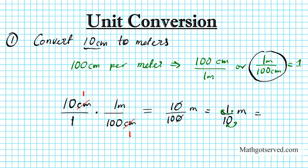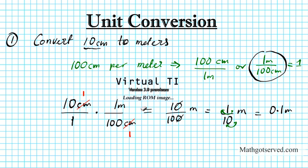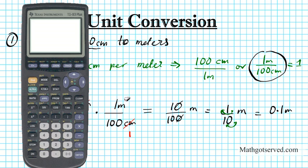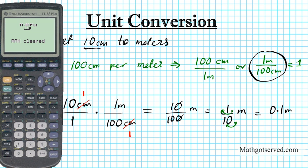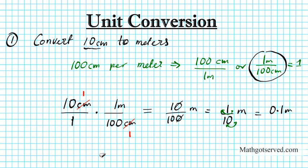So the answer is 0.1 meter. If I wanted to do that with my calculator, let me do that so you can see that my answer is correct. After setting up the conversion factor, you simply do 10 divided by 100, and the answer is 0.1.